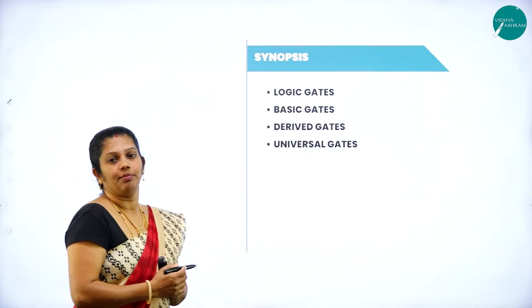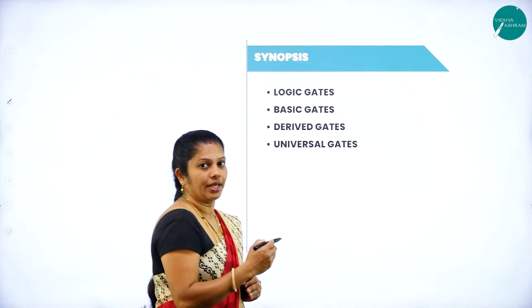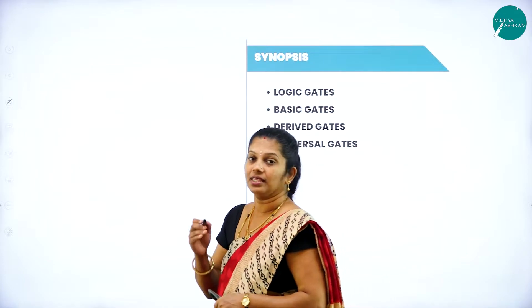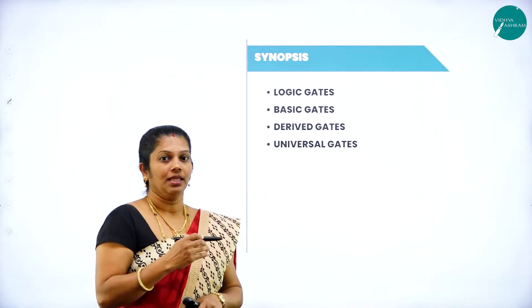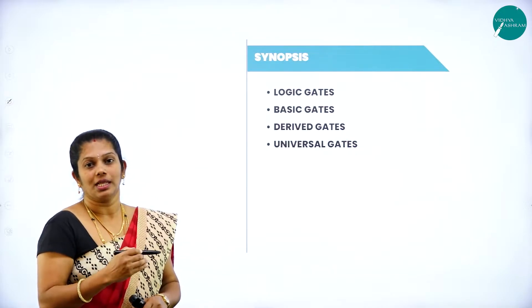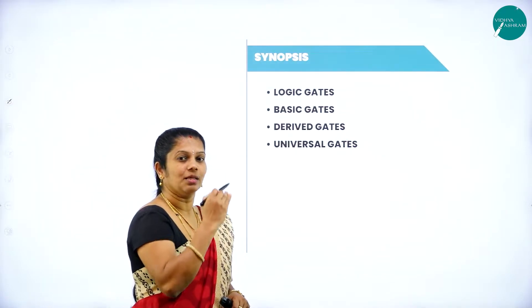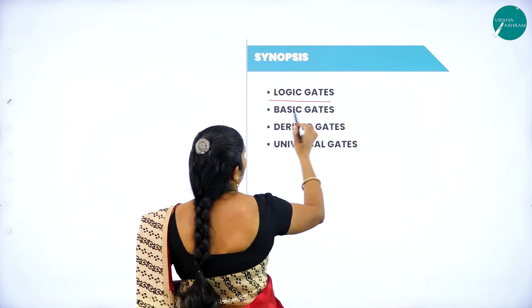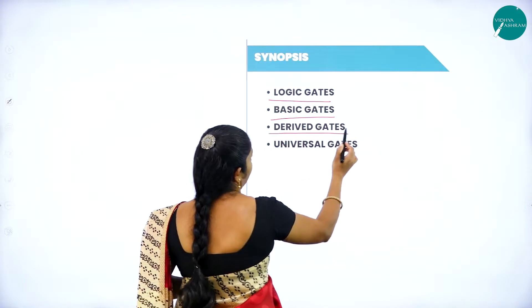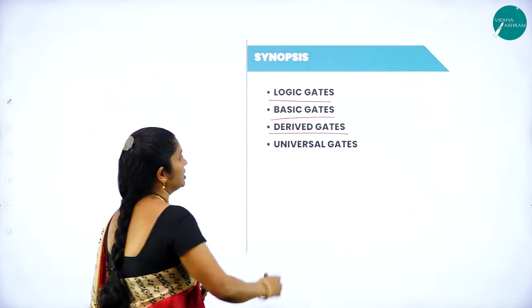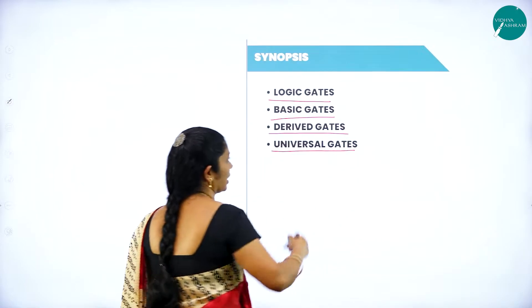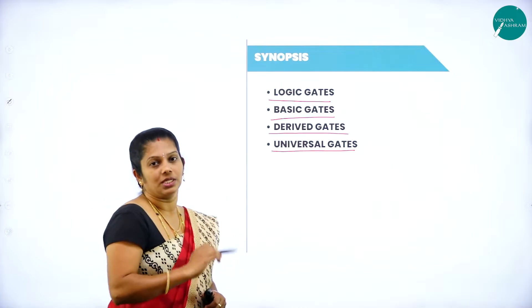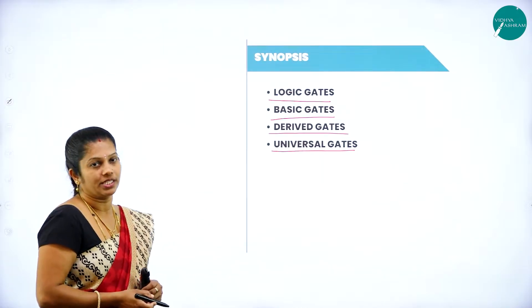In this chapter you will come to know: what is a gate, basic gates, derived gates, how to write the symbol and truth table, what is a universal gate, and how to prove a universal gate. A major expected question is: what do you mean by logic gate, basic gates, and derived gates? NAND and NOR gates are called universal gates — how to prove this will also be studied.